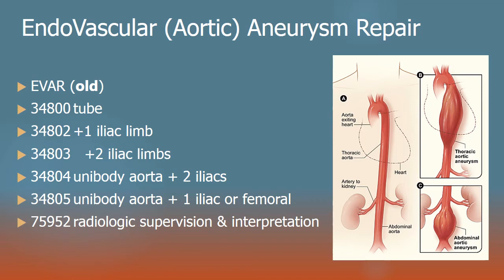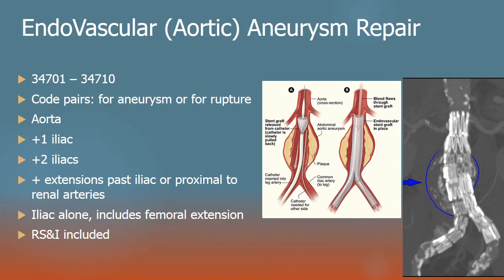Incidentally, these are all abdominal aortic repairs — not descending thoracic aorta. I will get into the visceral aorta, which is the part in between, but if you see a descending thoracic aorta, this is not what you're dealing with. The new codes are in a range of 34701 to 34710, occurring in pairs. Essentially for each version of repair, there's one code for an aneurysm, pseudoaneurysm, or dissection — anything that's not rupture — and a second code for rupture, since with rupture it will be more complicated, riskier, and more resource-intensive, so reimbursement is higher.